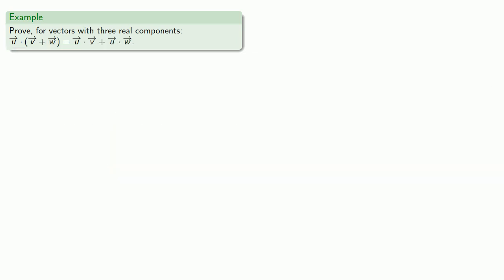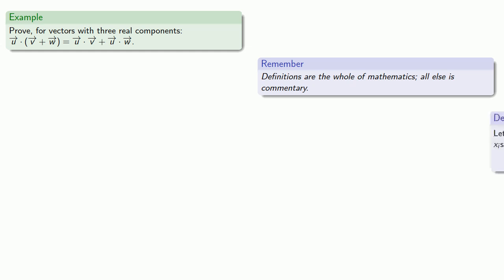Well, let's try to prove for vectors with three components the distributive property. So, it's useful to remember, definitions are the whole of mathematics. All else is commentary. So, this particular problem requires us to talk about vector addition and the dot product. So, we'll pull in those definitions.